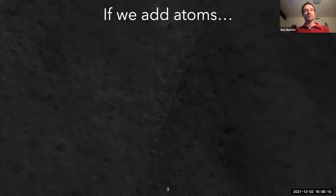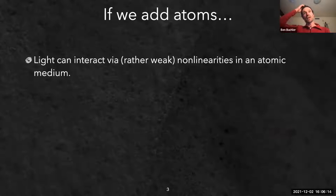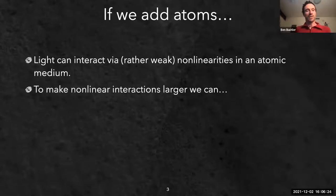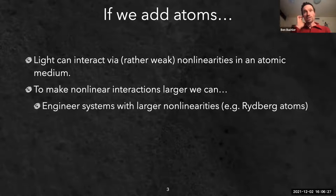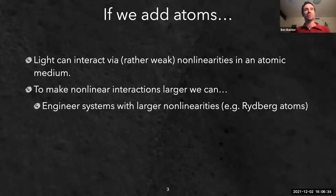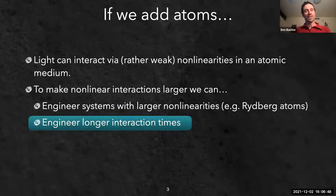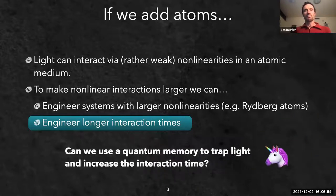We need some way of convincing photons to talk to each other, so that ideally a single photon can mediate a large phase shift on a second photon - enabling an optical quantum gate and non-linear optical quantum computers. Adding atoms allows light to interact via non-linearities in the atomic medium. To make non-linearities larger, one possibility is to engineer systems with larger non-linearities like Rydberg atoms.